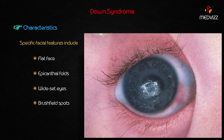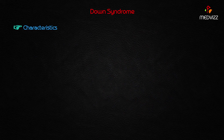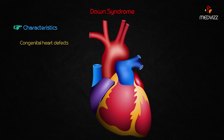In approximately 20 to 30% of cases, duodenal as well as esophageal atresia can also be seen in Down syndrome. The patient may present with these findings, so they should be noted.